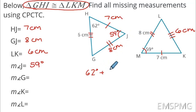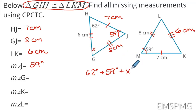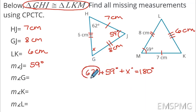Using the congruence statement just like I did for the side lengths, I notice that vertex J is the last vertex in the first triangle and therefore matches with M, which is the last vertex in the second triangle. I'll put one arc at J and one at M. J matches with M, and I already have a measurement for angle M — so I can bring that 59 degrees right over for angle J.